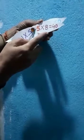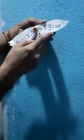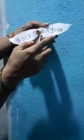5 x 7 is equal to 35. 5 x 8 is equal to 40. 5 x 9 is equal to 45.